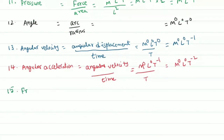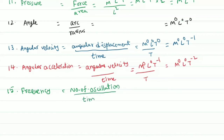The next quantity is frequency. Frequency is the number of oscillations per unit time, giving dimensions M power 0, L power 0, T power minus 1.